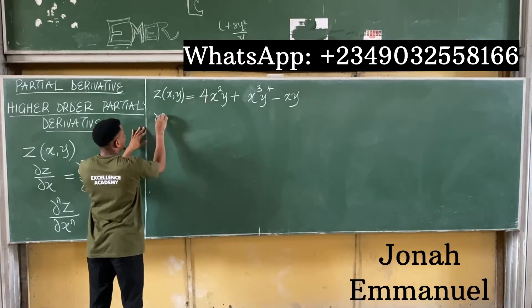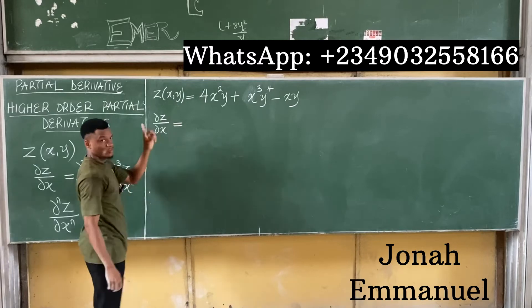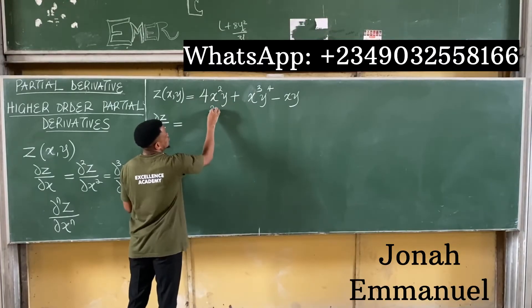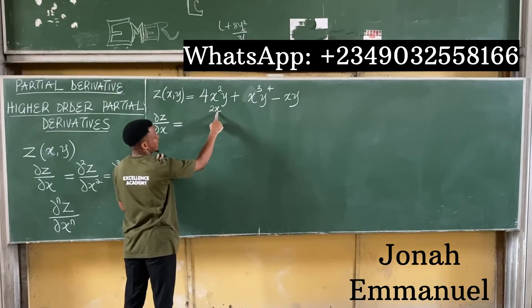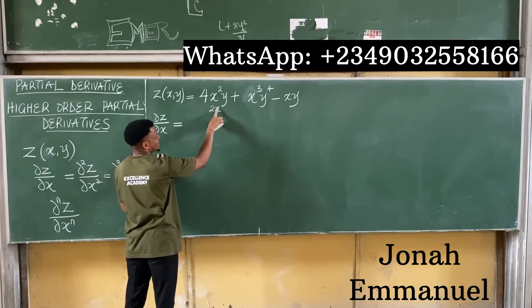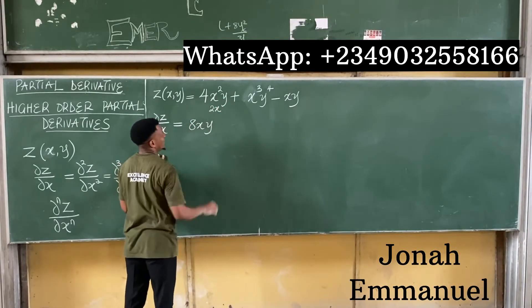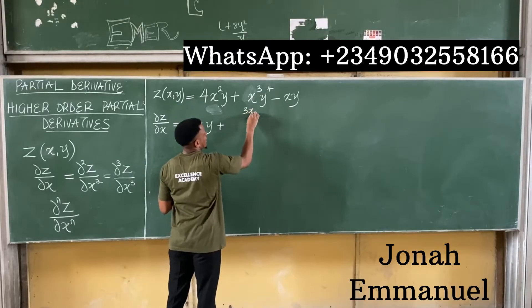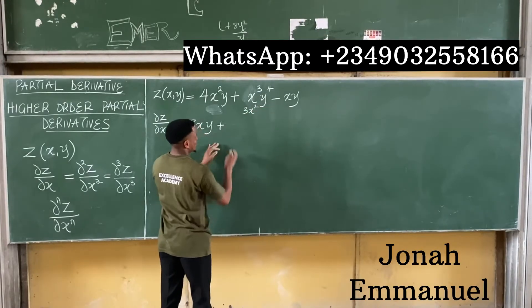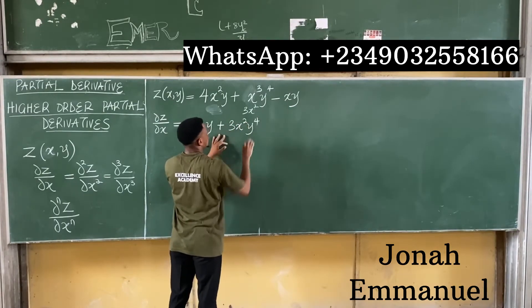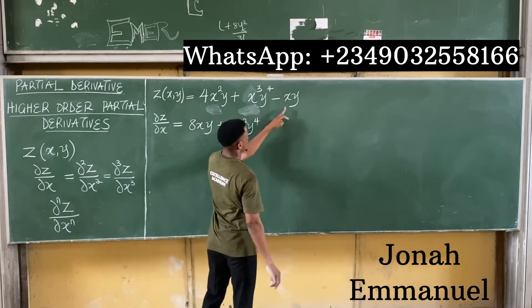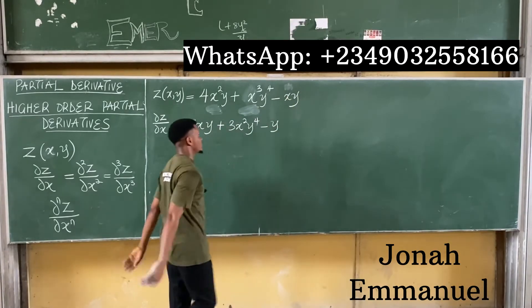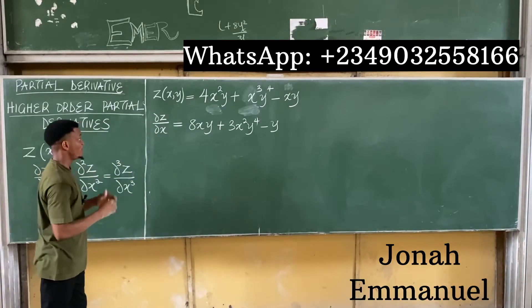From here I will have that partial z all over partial x — differentiating once. Differentiating x squared gives 2x; 4 times 2x times y gives 8xy. Then differentiating x cubed gives 3x squared; 3x squared times y to the power 4 gives 3x squared y to the power 4. Then differentiating x gives 1; 1 times y gives y, so we have minus y. So partial z over partial x equals 8xy plus 3x squared y to the power 4 minus y.